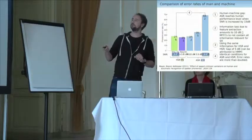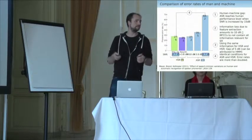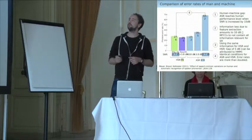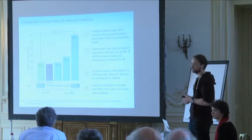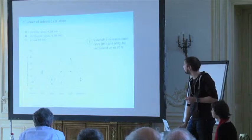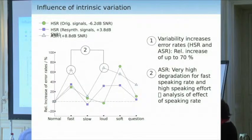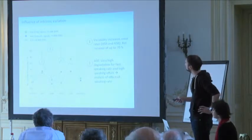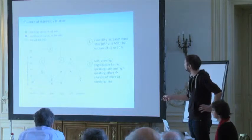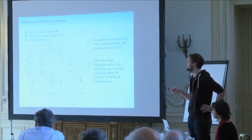If you look at human scores at minus 6 dB and ASR at the same signal-to-noise ratio, error rates are more than doubled. Looking at the influence of intrinsic variation — the relative increase of error rates for humans and machines for the different speaking styles — one key finding is that going from normal to fast speaking style is a major problem for automatic speech recognizers.